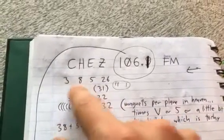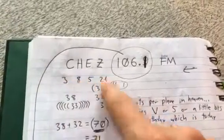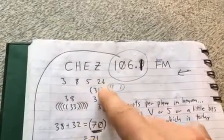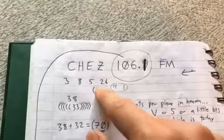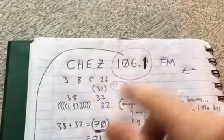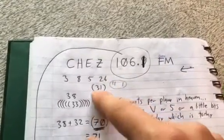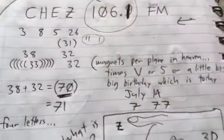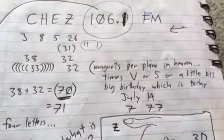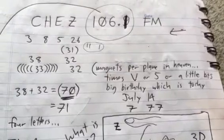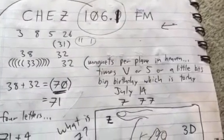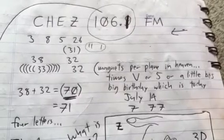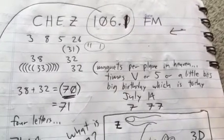My best friend in grade school was Charles. Anyways. EZ — five and 26 together, they're a 31, but because you added them together, you've got to put brackets or a circle around it. A circled 31 is a 32. 32 is important because there are 32 magnets per plane in heaven. Times it by a V or times it by five — a little bit's big birthday, which is today, July 14th, the 7-7-7 day.